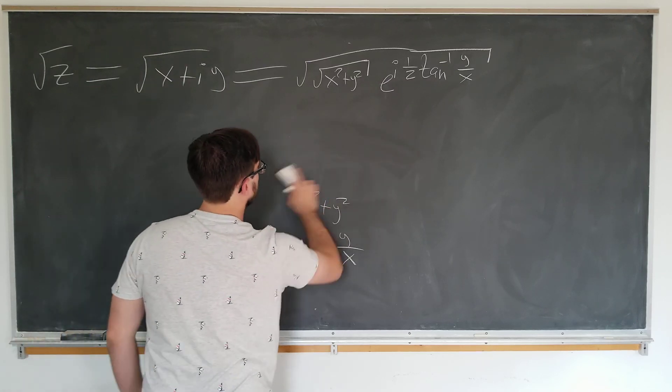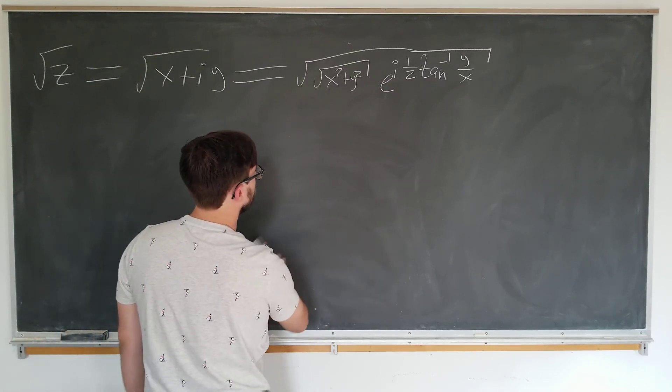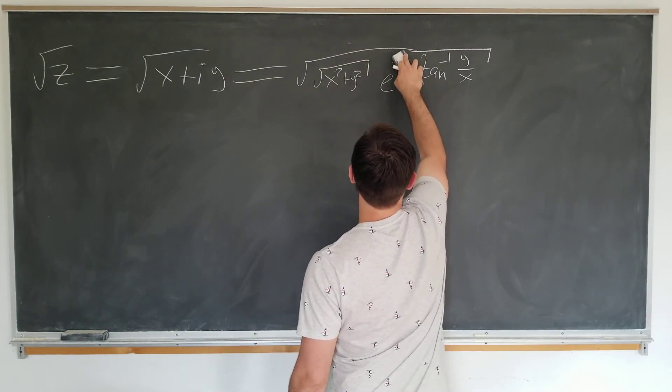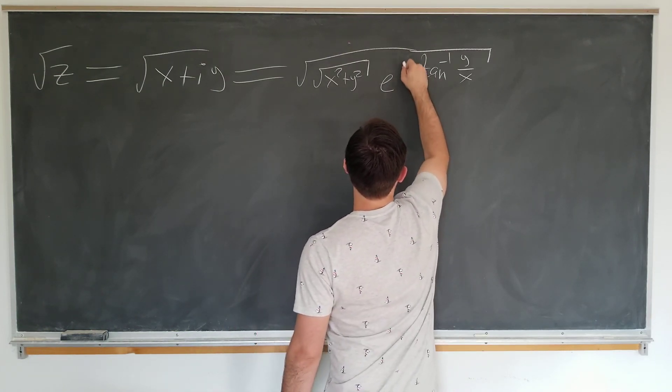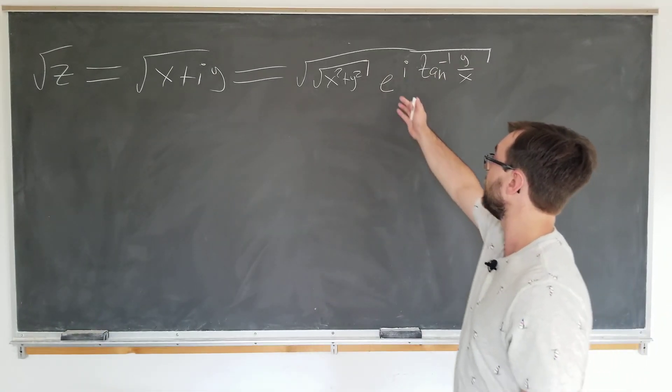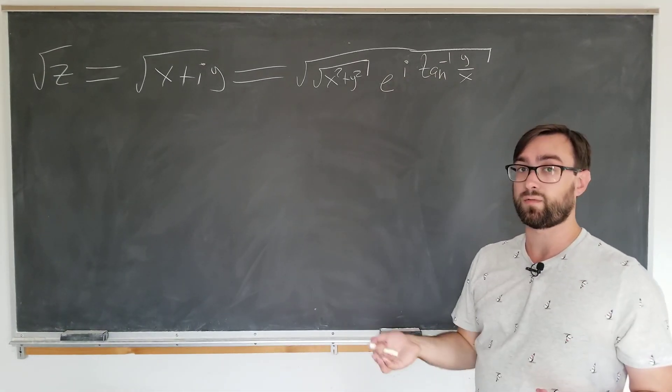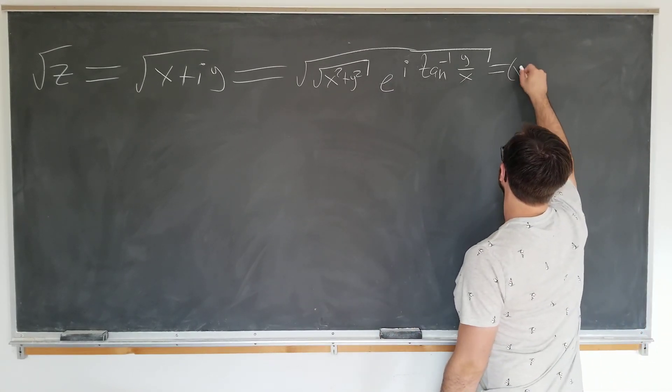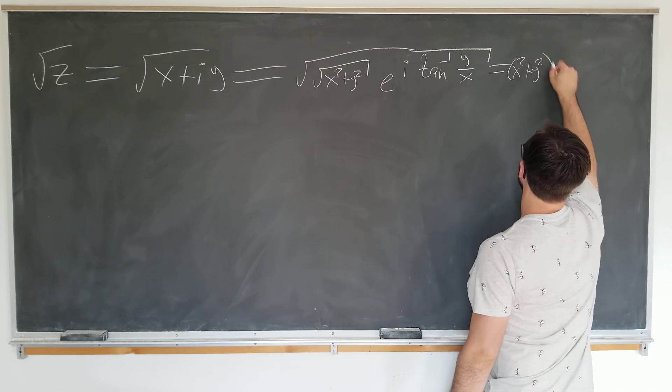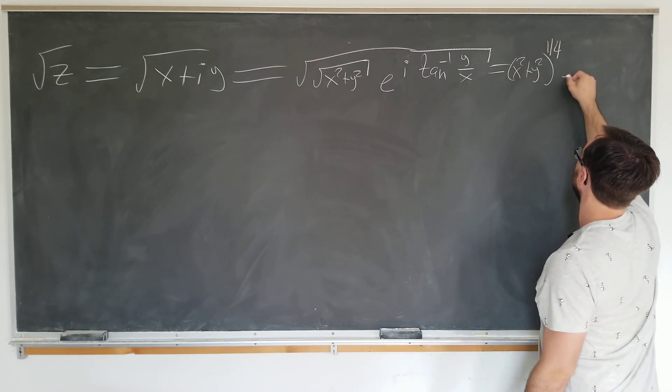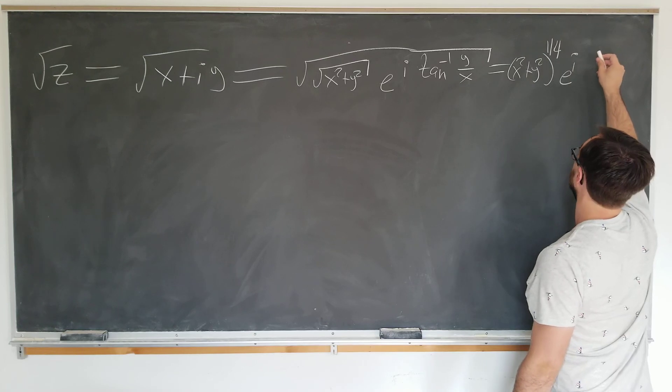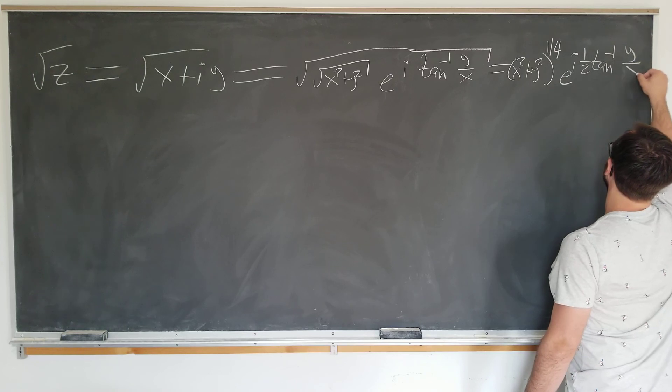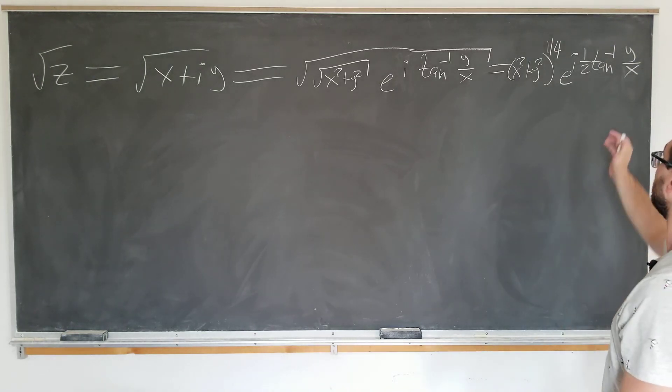All we're going to do is evaluate the square roots. e to the i inverse tangent y over x. Now we just simply take the square root of the square root, which is pretty cool. We put a one-half there. So it becomes x squared plus y squared to the one-quarter power. And we have e to the i one-half inverse tangent of y over x. This is the result that we seek.